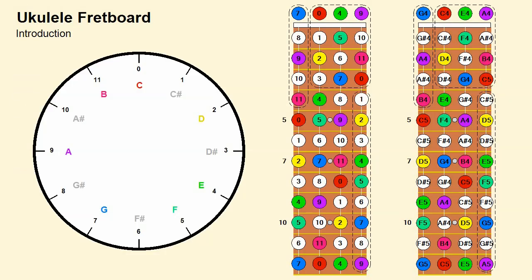The clock analogy will prove extremely helpful in locating these notes in the early stages of your familiarization with the instrument. On the left side is the clock face used in this analogy, and on the right side are two samples of the ukulele fretboard. The first shows the hours of the clock and serves as a guide to locate the notes on the second.